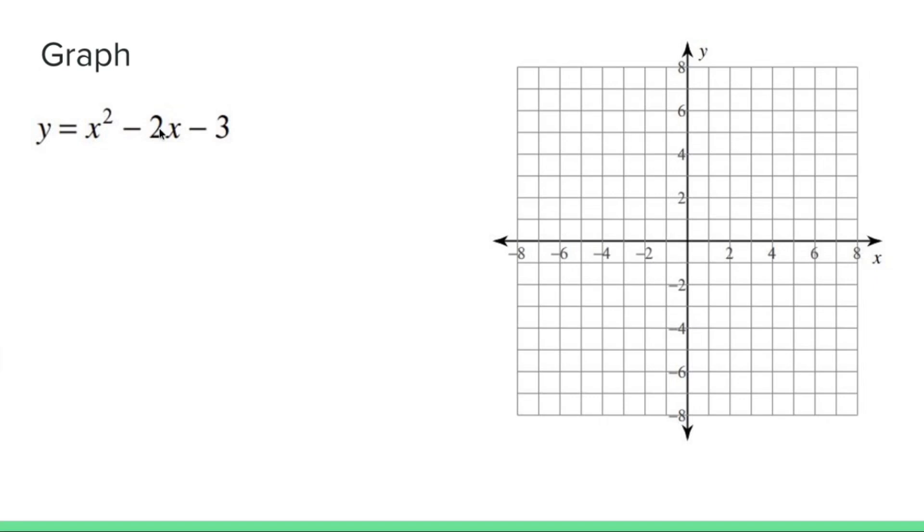Graph y equals x squared minus 2x minus 3. This is a quadratic. And a quadratic when graphed is going to be a parabola that looks a little something like this. Now it could be the upside down version, but I know it's the right side up version because the leading coefficient is positive.